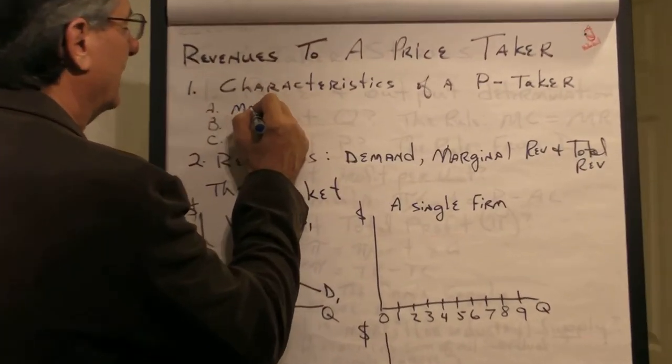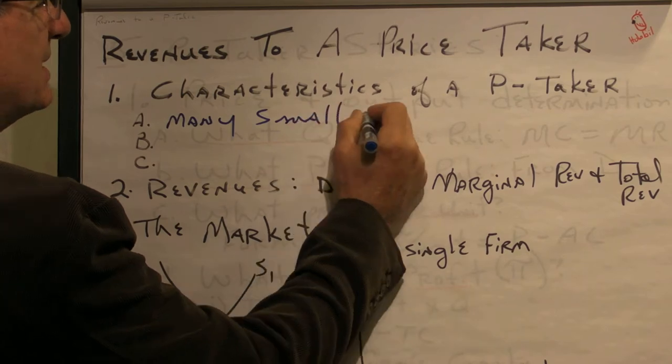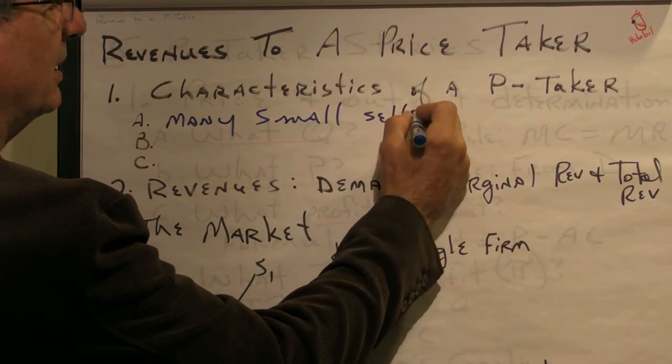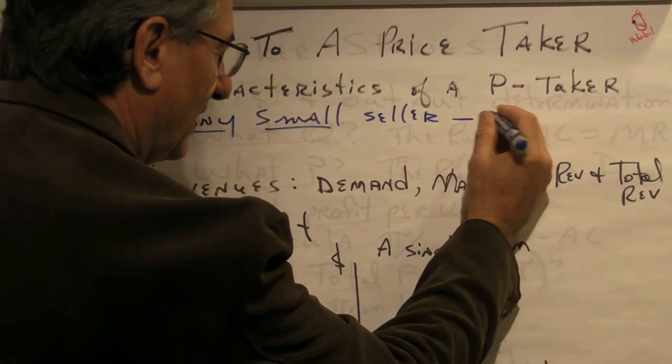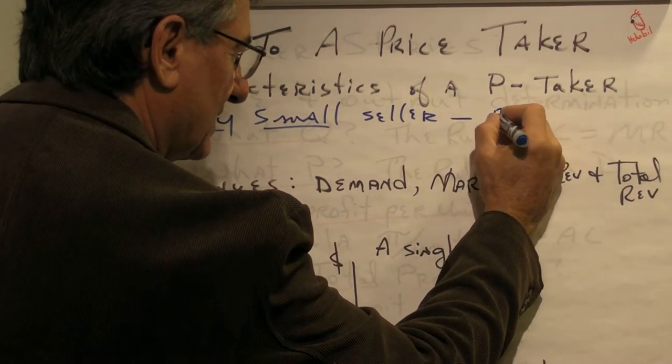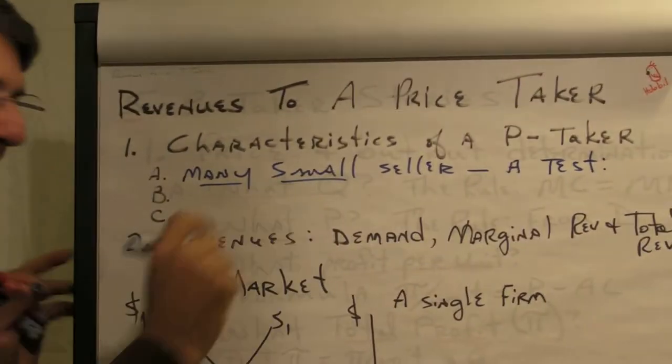A. Many small sellers. Now many and small is qualitative, not quantitative. That's why there is a test. What's the test of numerousness and smallness?